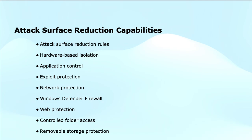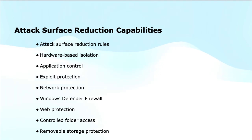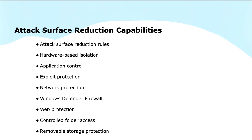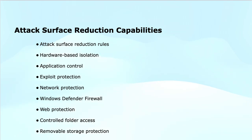Next is hardware-based isolation, a security feature that isolates potentially risky applications or processes from critical system resources using hardware-based virtualization, making it harder for attackers to compromise the operating system. Next is application control, which allows administrators to define which applications are trusted or allowed to run, preventing execution of malicious or unauthorized applications while whitelisting safe ones. Next is exploit protection, which uses mitigations like data execution prevention (DEP), address space layout randomization (ASLR), and control flow guard (CFG) to make it harder for attackers to exploit vulnerabilities.